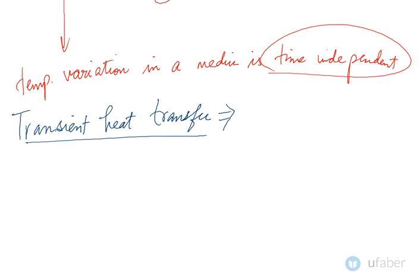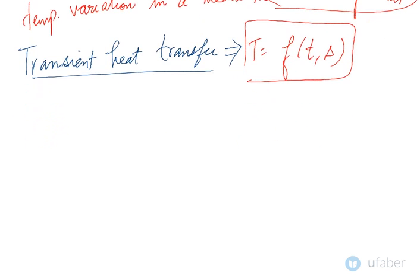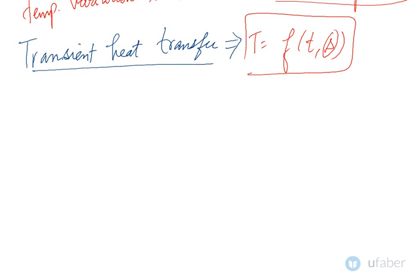So I would write down here that temperature is a function of time as well as space, whereas in steady state the time independency was there. In certain cases the variation is with respect to time and we do not consider the variation with respect to position.